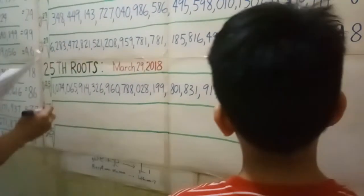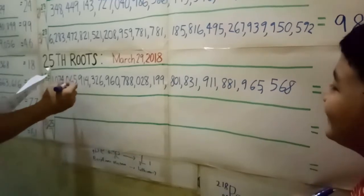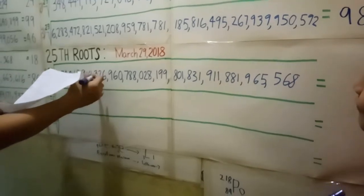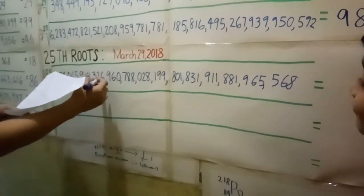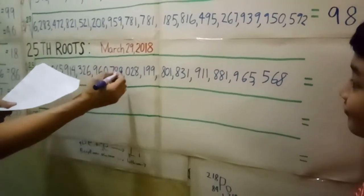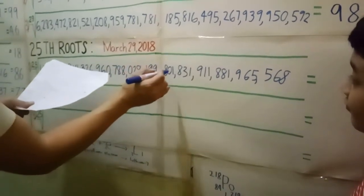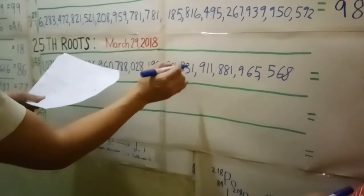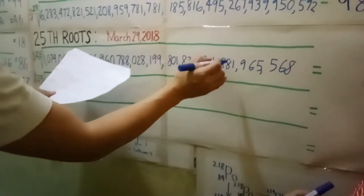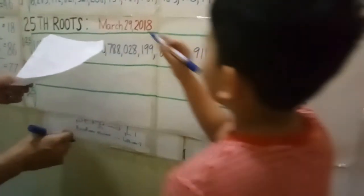What's the 20th root of 13 decillion, 74 decillion, 651 decillion, 914 decillion, 326 nonillion, 960 octillion, 788 septillion, 28 sextillion, 199 quintillion, 800 quadrillion, 831,911,881,965,568? That was the 20th root of that number.